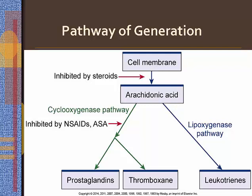Thromboxane is a powerful vasoconstrictor and a platelet-aggregating agent that promotes clot formation. It has a short half-life, and its pallor effect soon gives way to the vasodilating effects of prostaglandins and histamine. Leukotrienes, known as slow-reacting substances of anaphylaxis, constrict smooth muscles of the bronchi, causing narrowing of the airway, and increase capillary permeability, leading to airway edema.